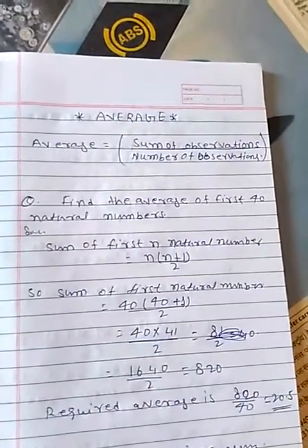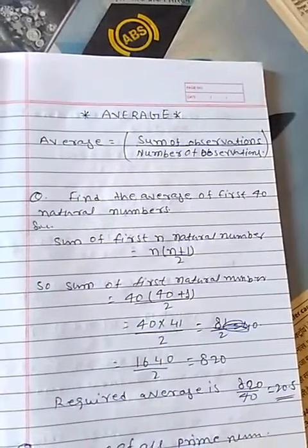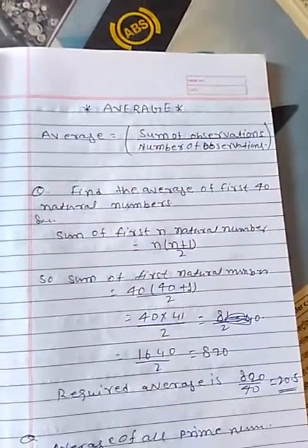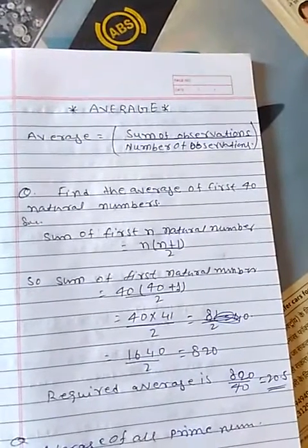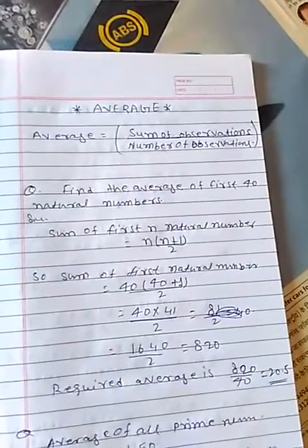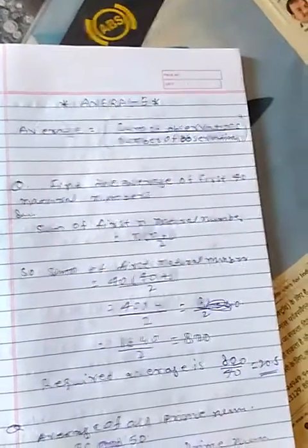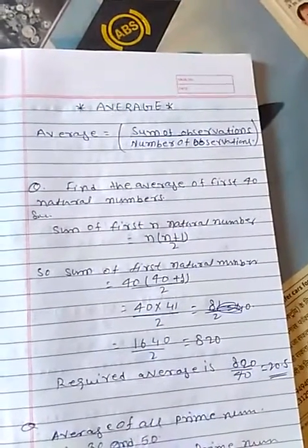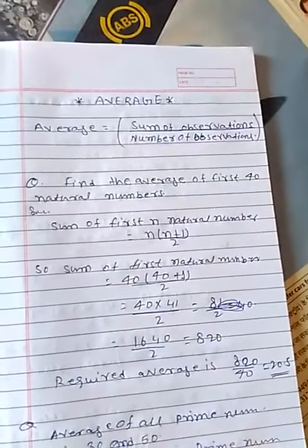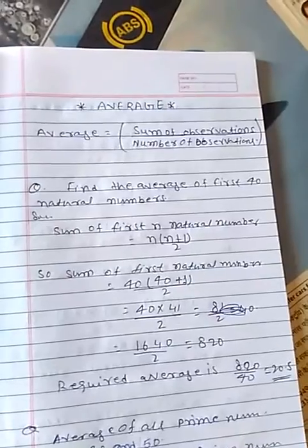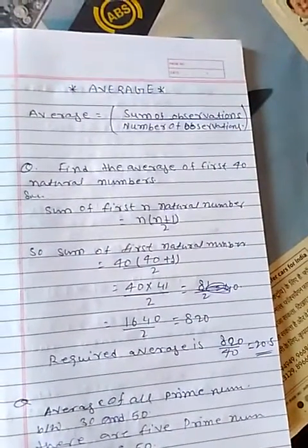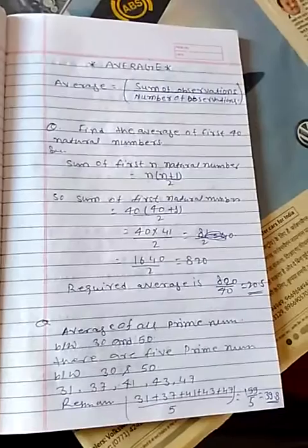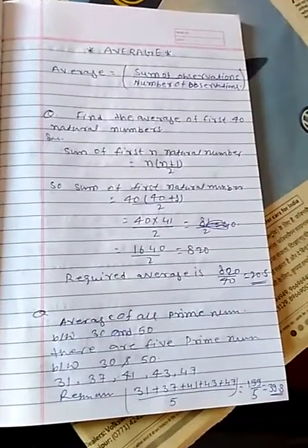Average equals sum of observations divided by number of observations. To find the average of the first 40 natural numbers, we use the formula: sum of first n natural numbers equals n times n plus 1 divided by 2. So sum of first 40 natural numbers is 40 times 41 divided by 2, which equals 1640 divided by 2, equals 820. Required average is 820 divided by 40, which equals 20.5.